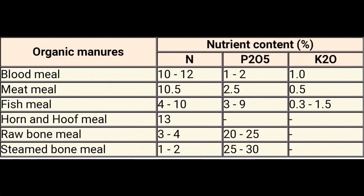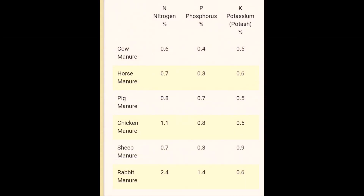Next are animal organic manures — blood meal, meat meal, fish meal, and steamed bone meal — with their nitrogen, phosphorus, and potassium content listed. Amongst all, fish meal and blood meal have the highest nitrogen content. These need to be added in small quantities, not like bulky organic matter.